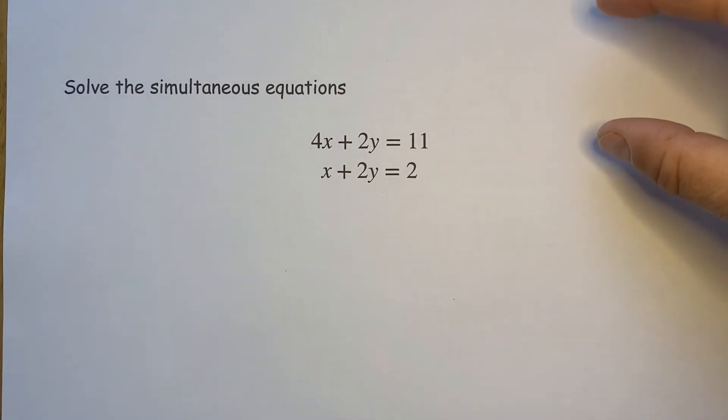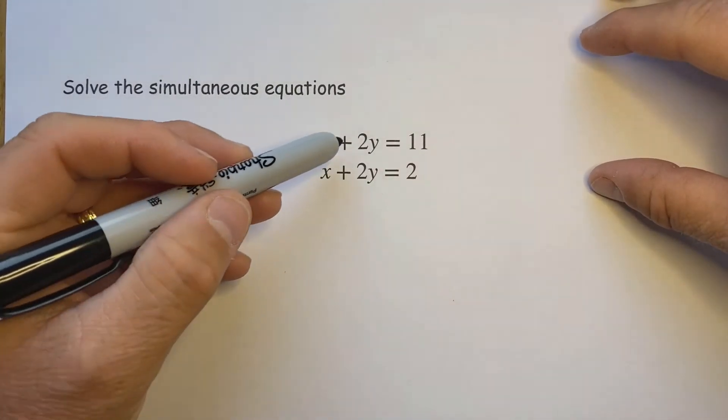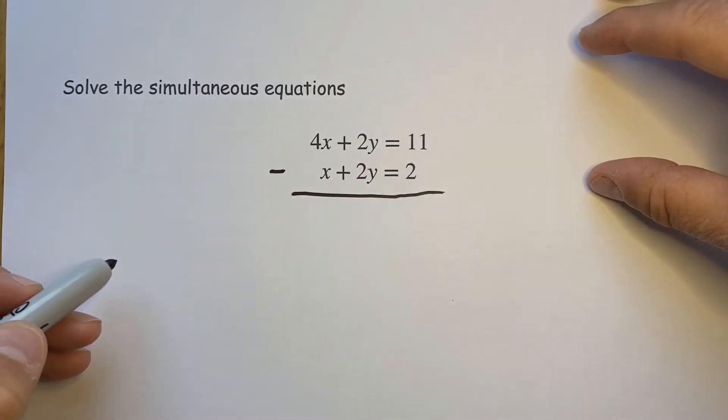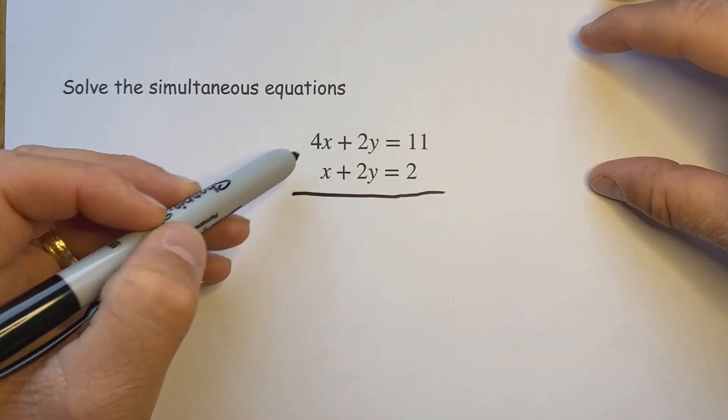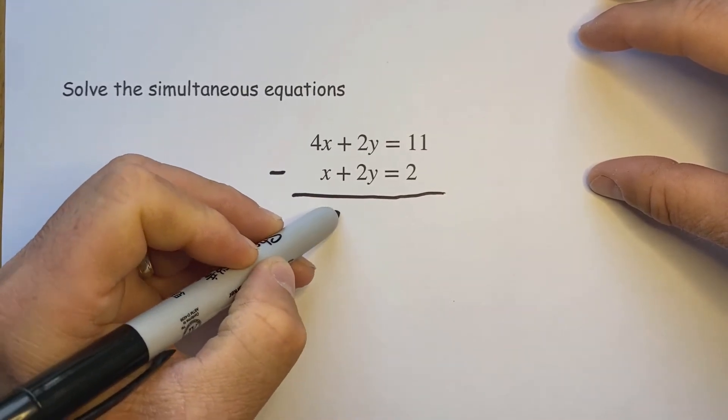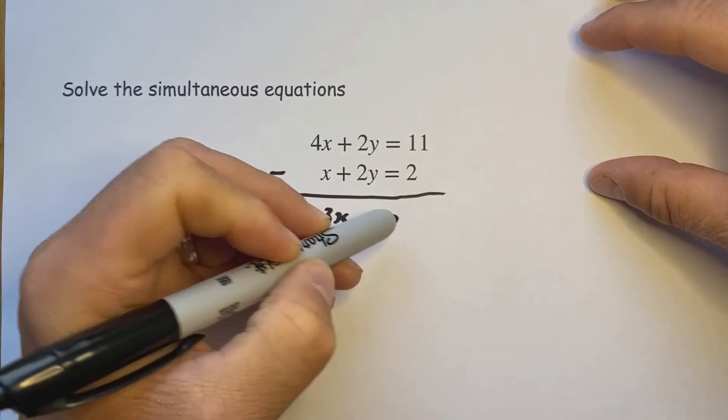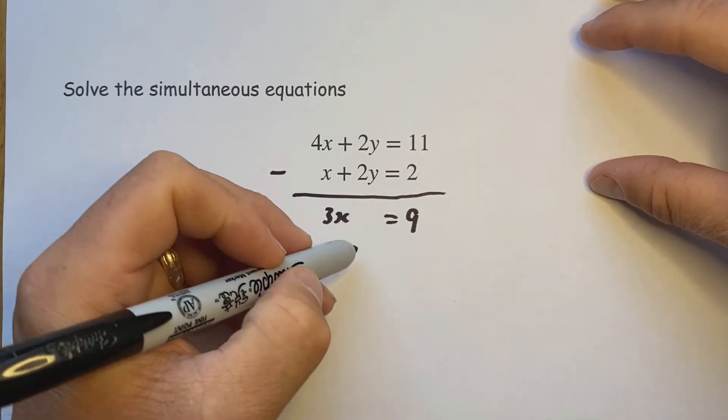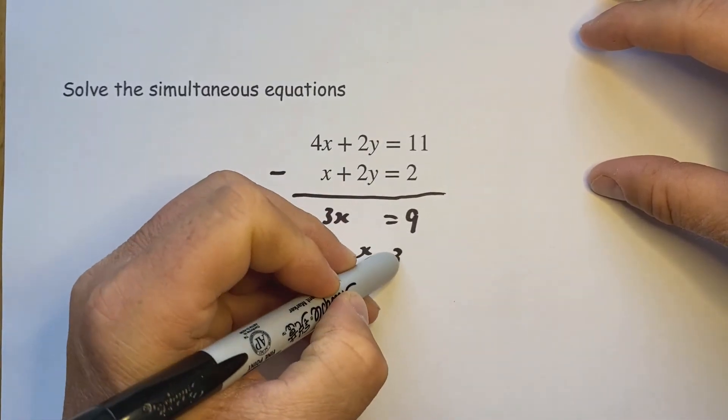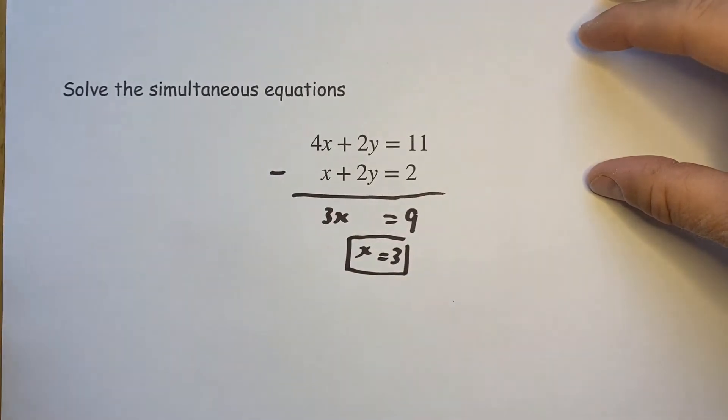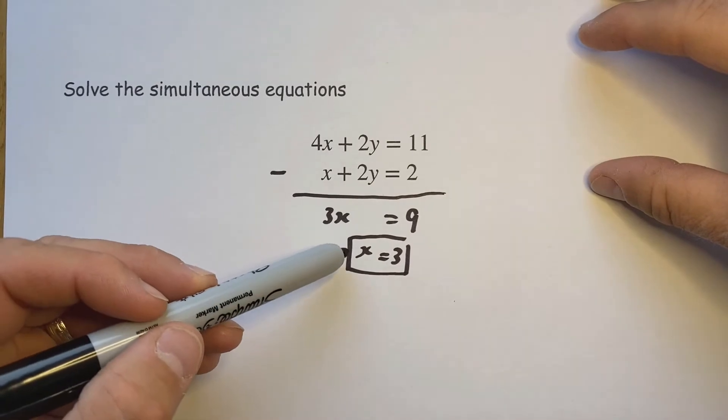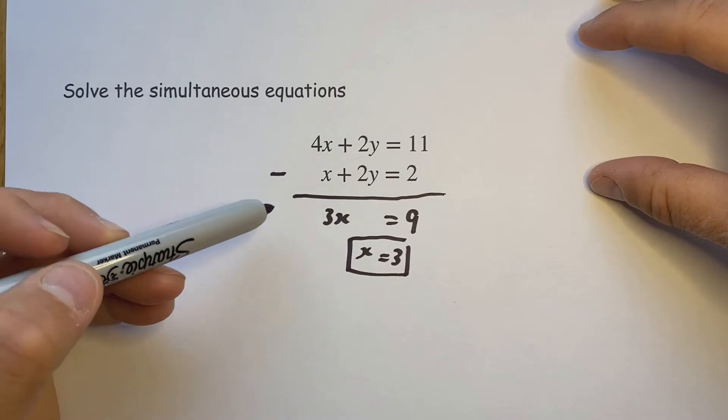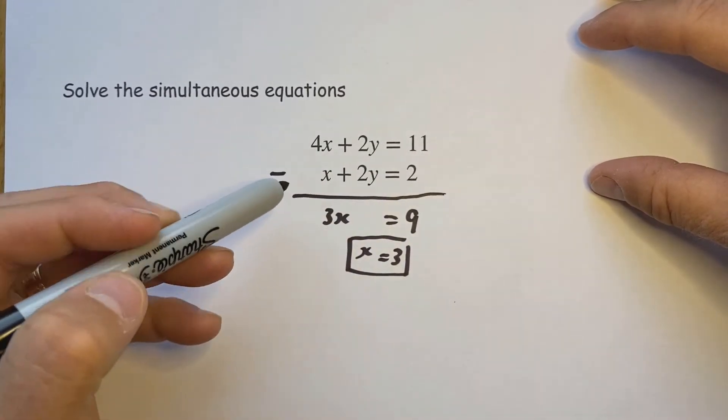Very similar to the previous example. In order to eliminate the two y's, again adding them is not going to eliminate them, but subtracting will. This time however we end up with 4x take x, we end up with 3x, 2y take 2y disappears, equals 11 take 2, 9. So if 3x is equal to 9 then the letter x is equal to 3. Now I've always been putting that back into the first one, it doesn't matter which one you put it into. I say that because the second equation has the easier numbers.